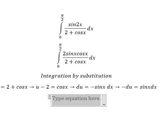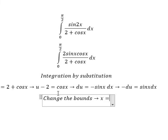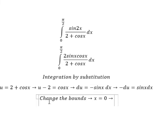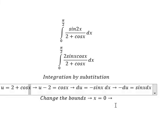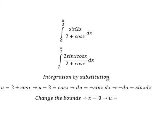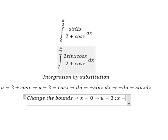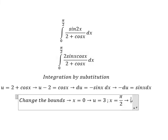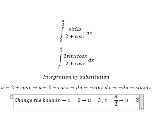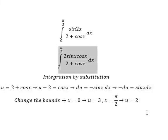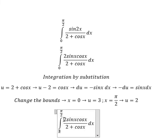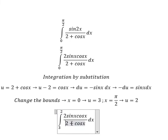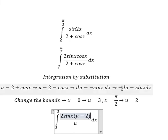Next we need to change the bounds. When x equals zero, we substitute zero to find the value of u, so u equals three. When x equals pi over two, u equals two, because cosine of pi over two equals zero. So we change the lower bound zero to three, the upper bound pi over two to two, (2 + cos x) to u, cosine x to (u minus two), and sin(x) dx to negative du.